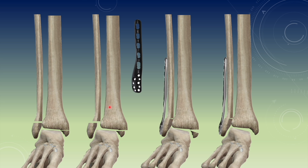A similar situation will occur when there is transsyndesmotic injury. If there is injury to the ligaments here, there will be translation of the whole medial malleolus, talus, and lateral malleolus block in a medial or lateral direction. Again, if you try to fix the fibula first and there is minor malleolar malalignment on the lateral side not visible fluoroscopically, there will be a slight tilt of the talus towards the fibula, and in an attempt to reduce the medial malleolus you will get asymmetry of the joint.